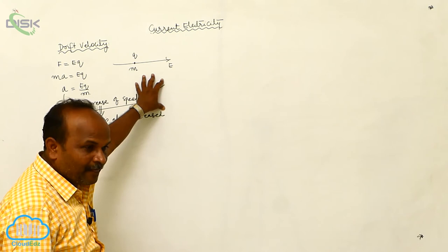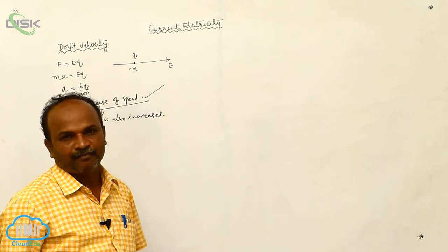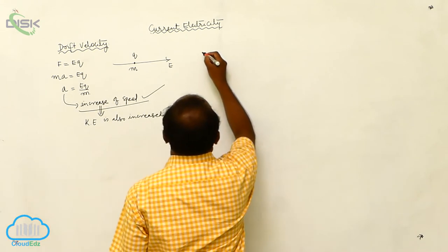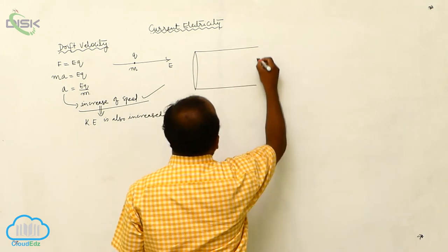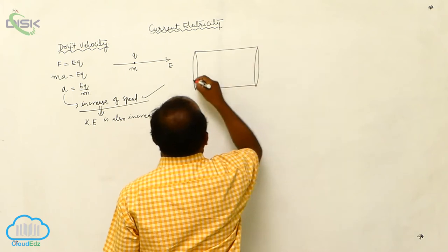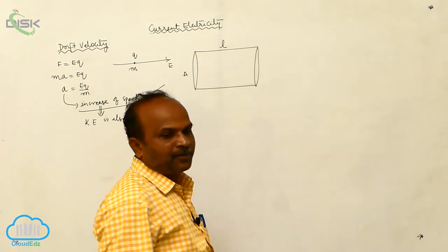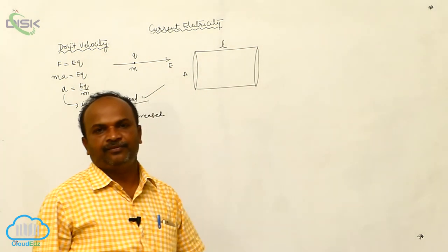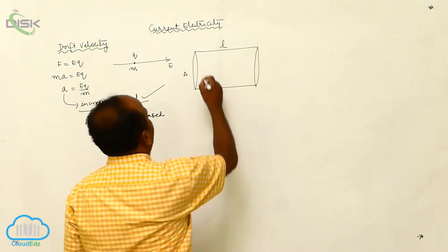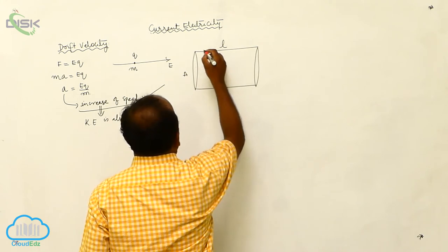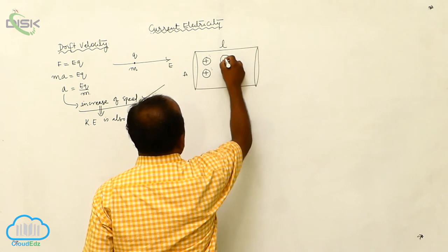Now, what is the behavior of the same charged particle in a conductor? Let us consider a conductor with cross-sectional area A and length L. Suppose that conductor is made of copper.